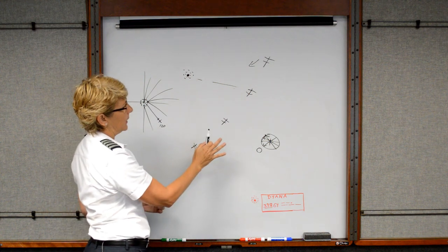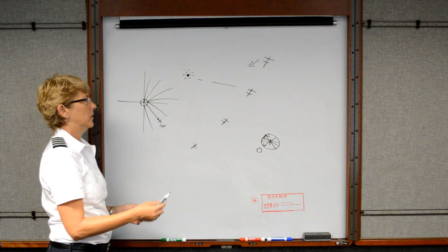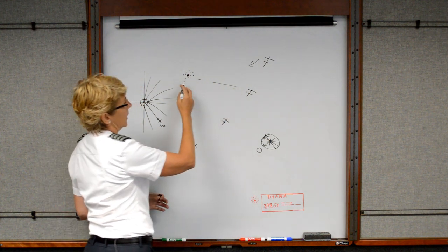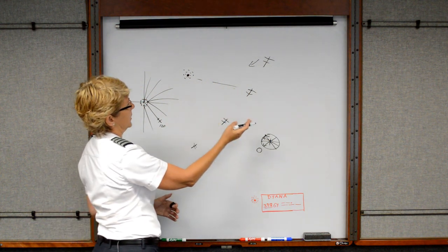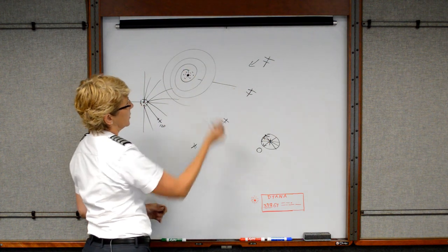But in the situation with the NDB, there's no particular radial. We actually call them bearings. You can choose a bearing to the station, or you can choose a bearing from the station, but it basically just sends out a signal that the arrow points to.